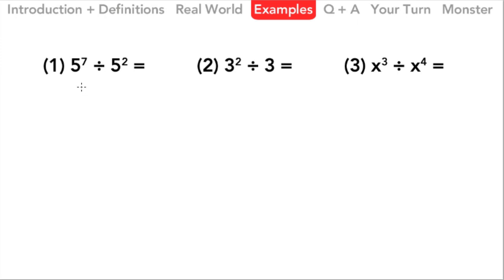Here are some examples. In the first one, we've got 5 to the 7th power divided by 5 to the 2nd power. We have the same base, so we go straight in: we just do 5 to the 7th minus 2, which gives us 5 to the 5th power. That's our answer.